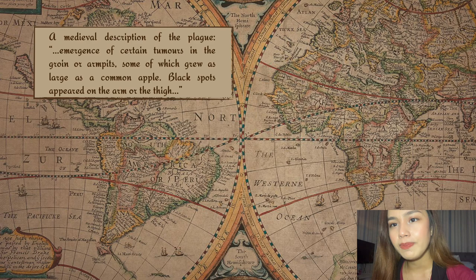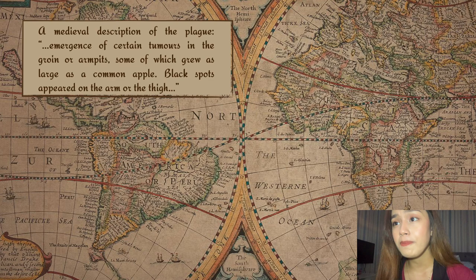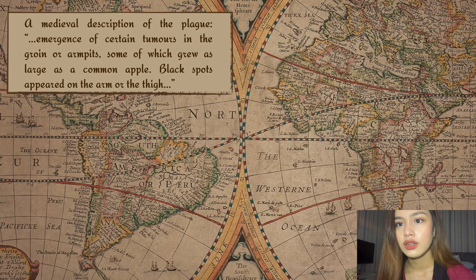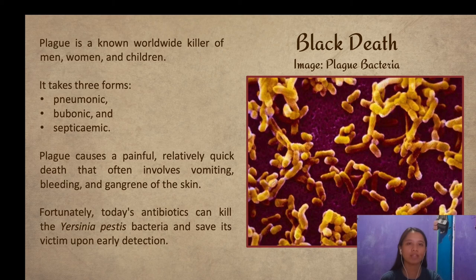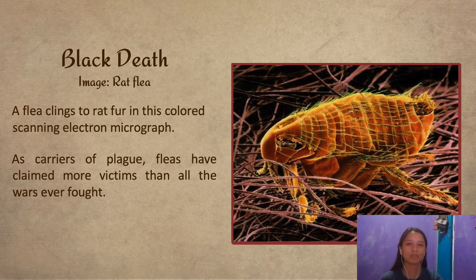A medieval description of the plague noted the emergence of certain tumors in the groin or armpits, some of which grew as large as a common apple, and black spots appeared on the arm or thigh. The Black Death is believed to have been caused by the bacterium Yersinia pestis. It comes in three forms: first, pneumonic plague — the most violent and advanced stage, affecting the lungs; second, bubonic plague — the most common form, where skin sores blacken, giving it the nickname 'Black Death'; and third, septicemic plague — which infects the bloodstream. If left untreated, pneumonic and septicemic plague kills almost 100 percent of those infected. Fortunately, Yersinia pestis can be killed and people can be cured.